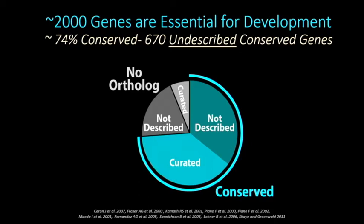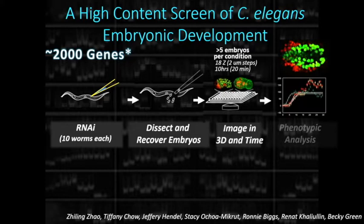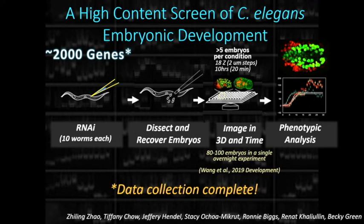These include 74% of genes which are conserved, and over 600 undescribed conserved genes — low-hanging fruit for potential disease-relevant genes. For the screen, we do RNAi directed against the 2,000 genes in the two strain backgrounds. We inject double-stranded RNA, which we manufacture in-house, dissect out and recover embryos, and array them on multi-well plates. We image in three dimensions and in time, and we perform phenotypic analysis, collecting between 80 and 100 embryos in a single overnight experiment for 14 conditions. We have completed data collection on this project.